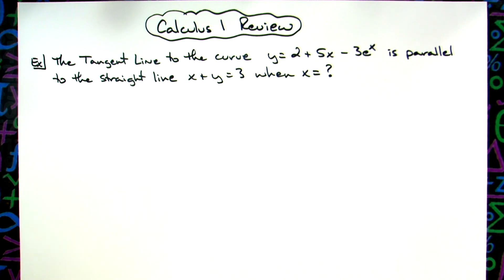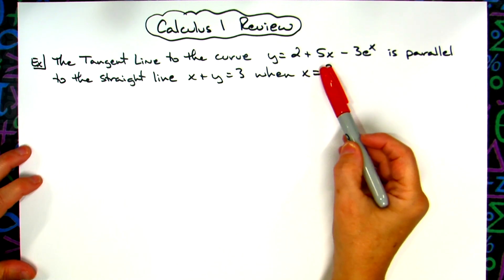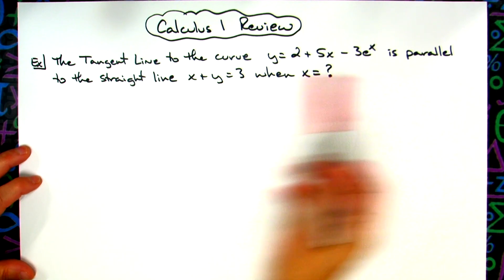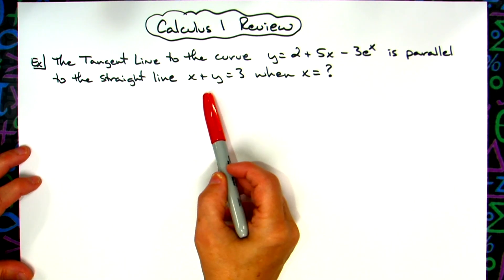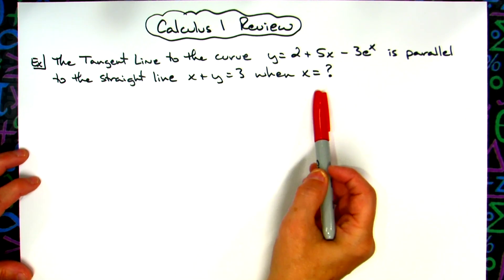We've got the tangent line to the curve y = 2 + 5x - 3e^x is parallel to the straight line x + y = 3 when x equals what?